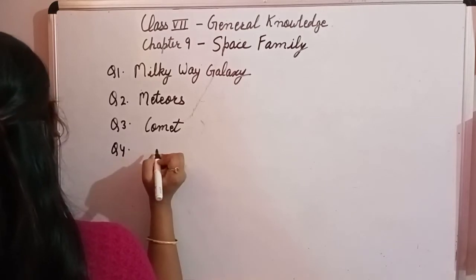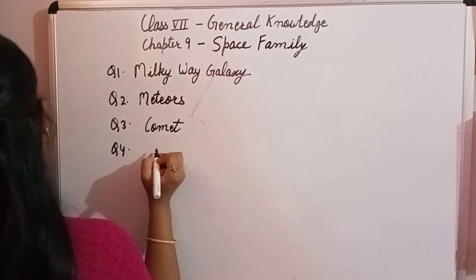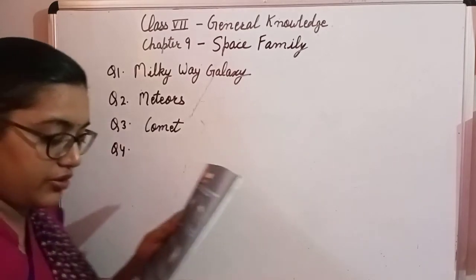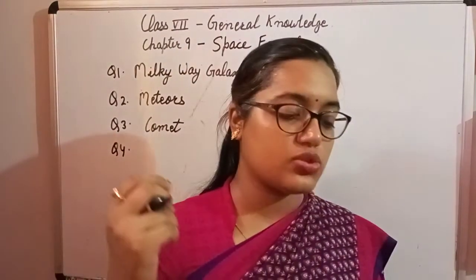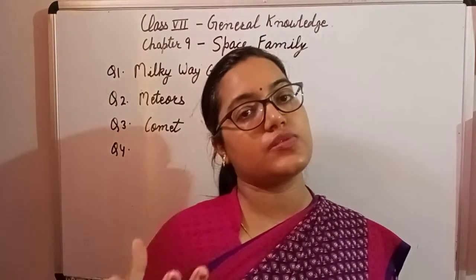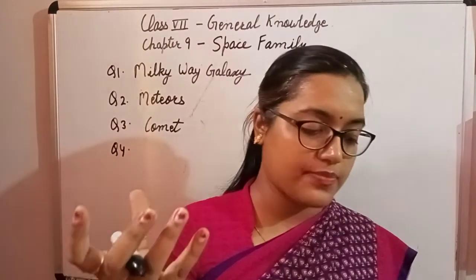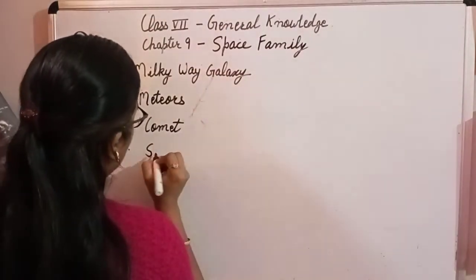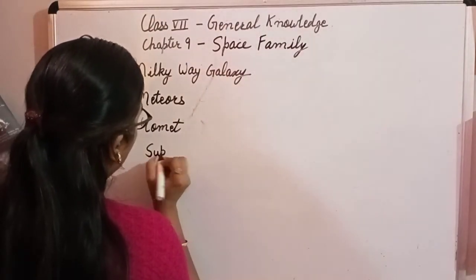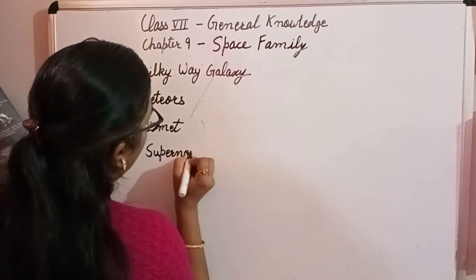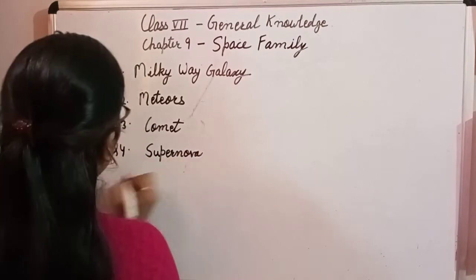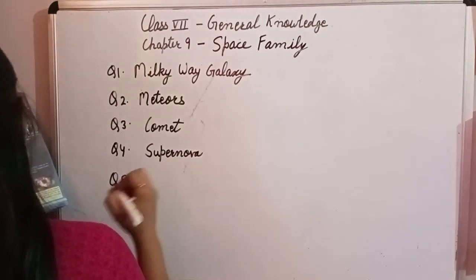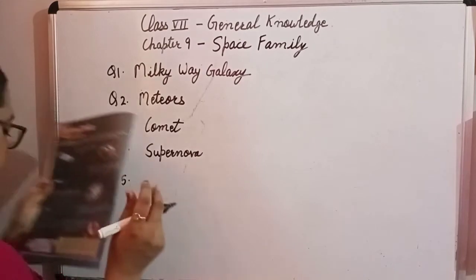Question number four: it is formed when a large star uses up its supply of fuel — that is hydrogen — collapses under its own weight, and explodes. That is known as a supernova.